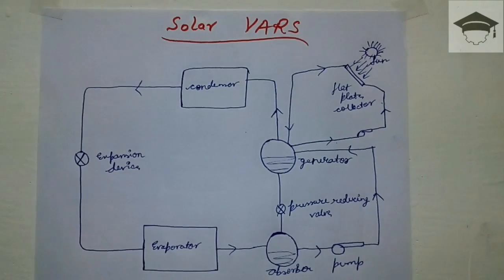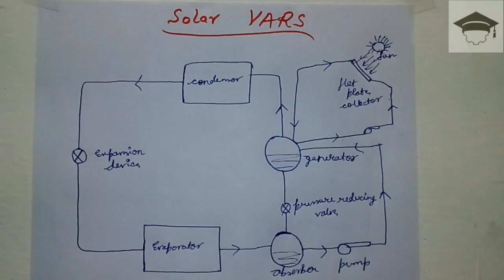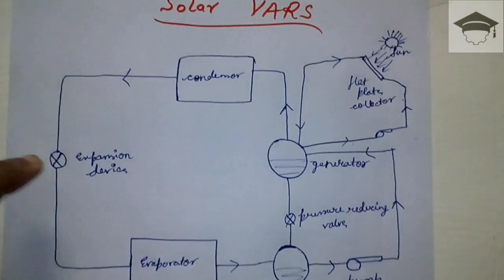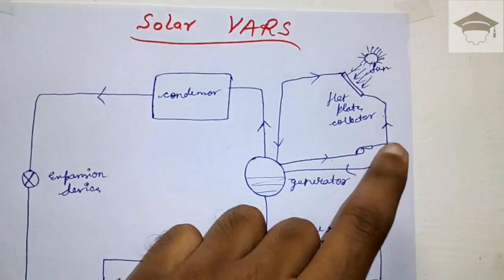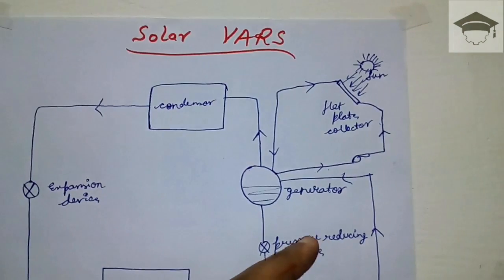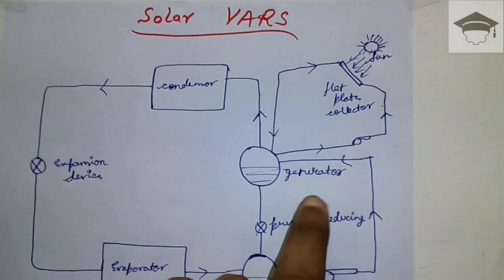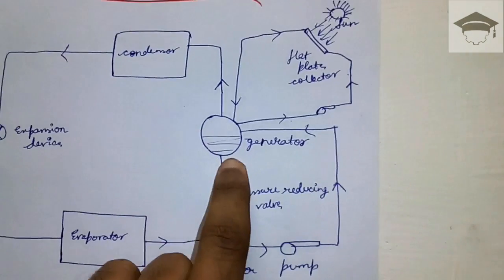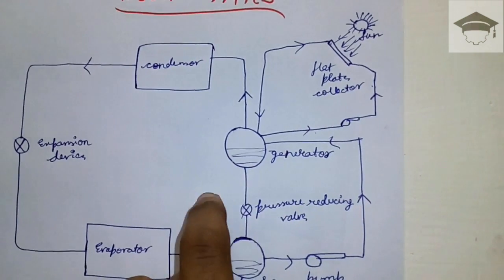Now, Solar VARS employs the use of solar energy in the generator. In the conventional VARS cycle, we have to provide external energy input to the generator. In Solar VARS, we use the energy of the sun in the generator.